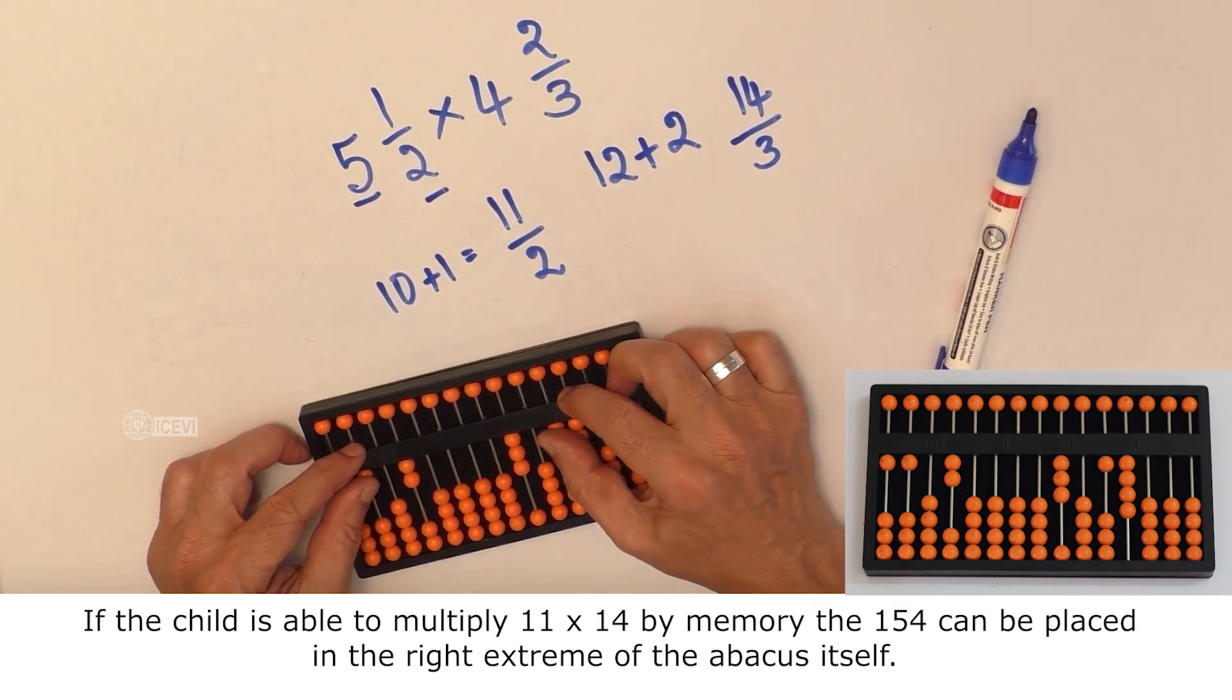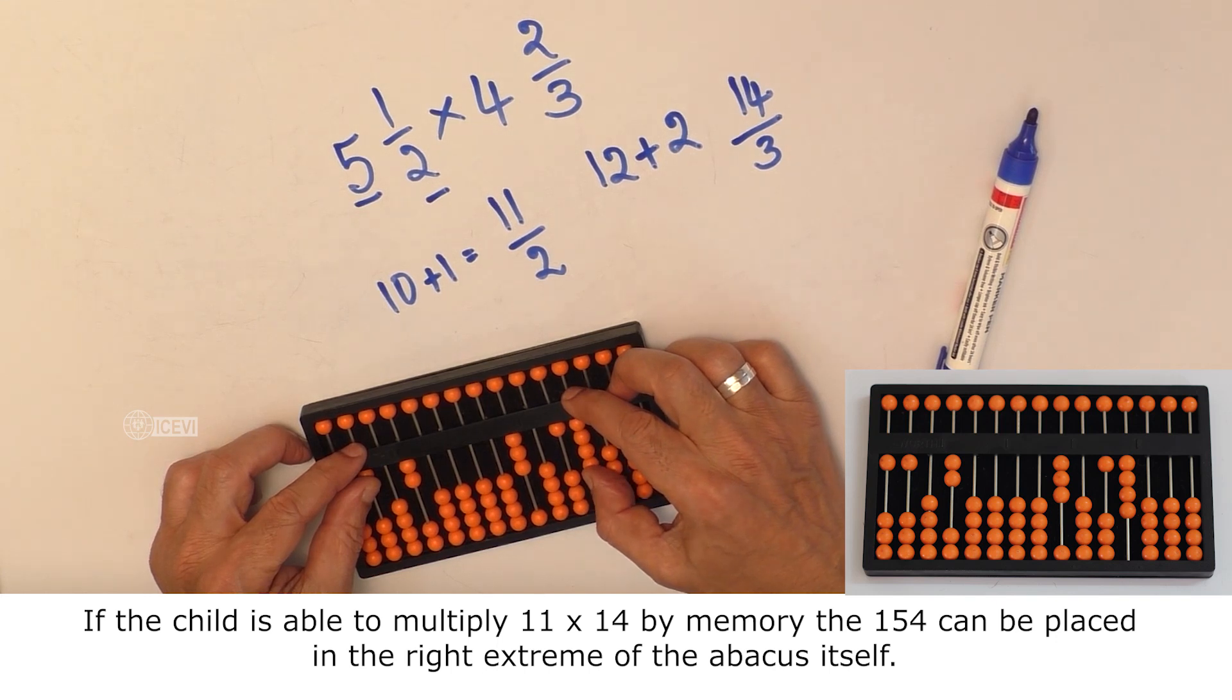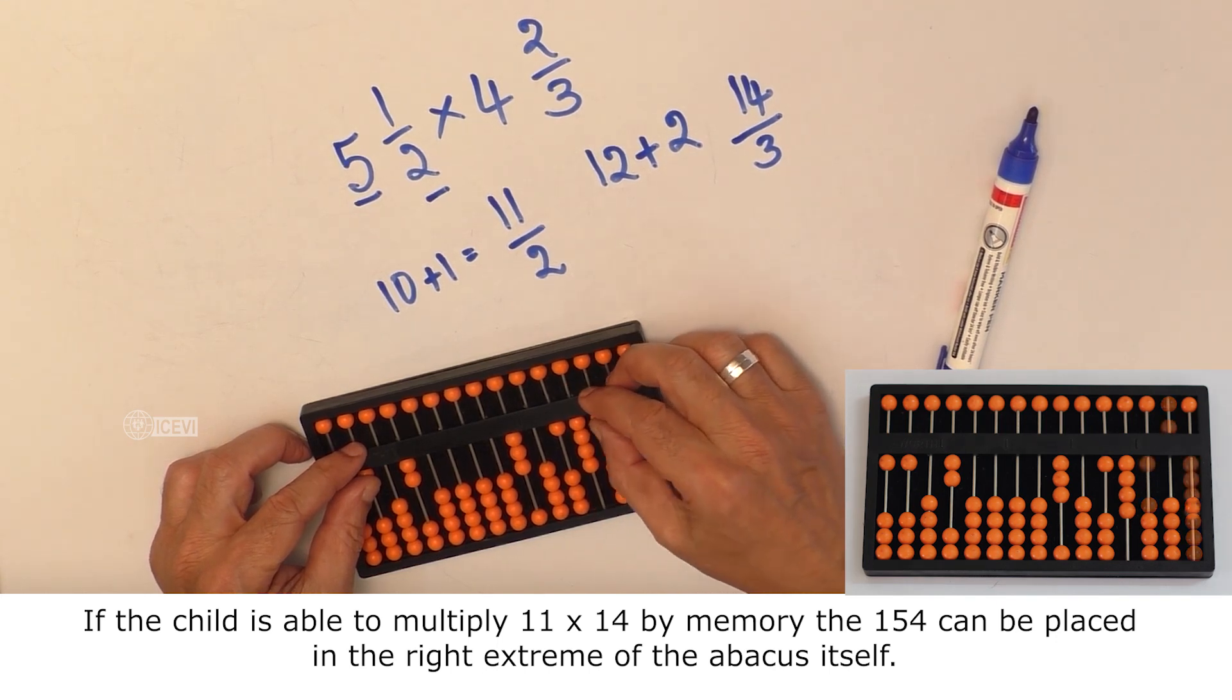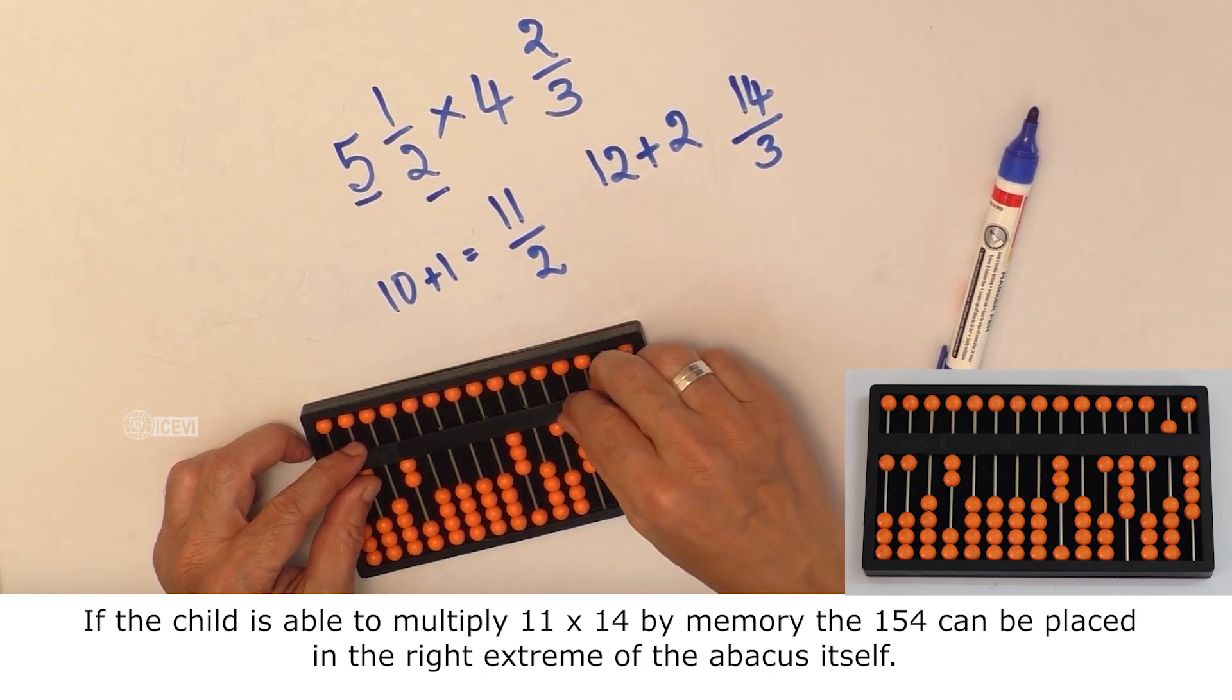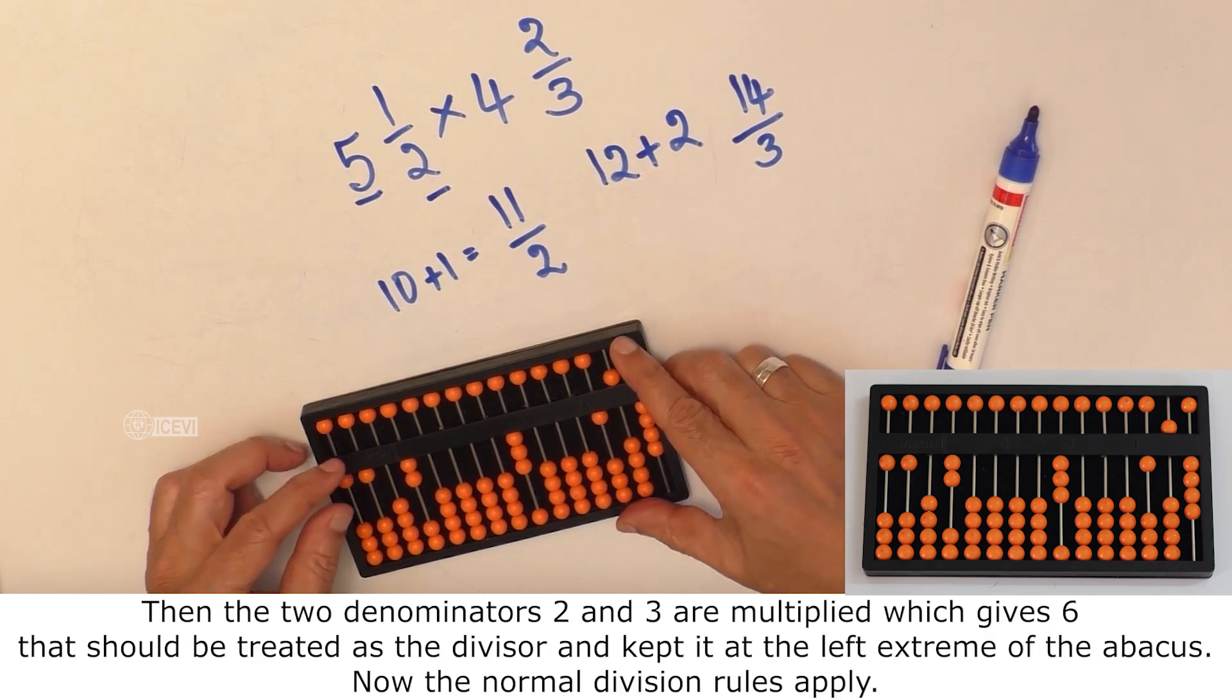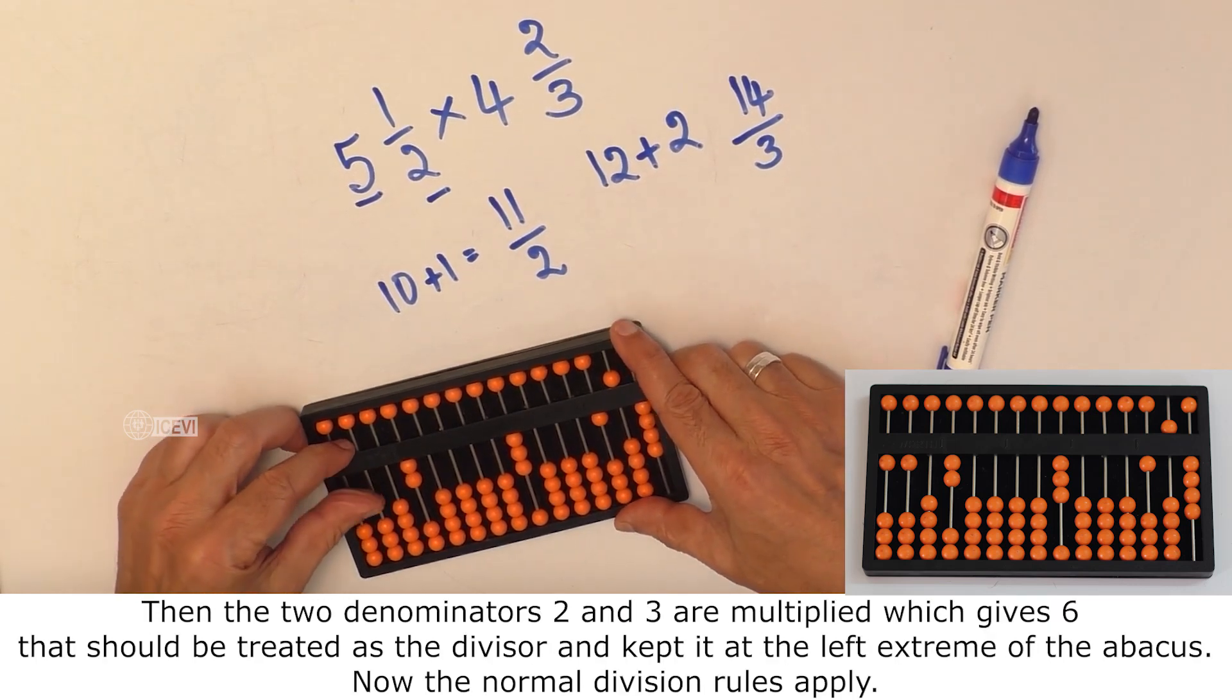If the child is able to multiply 11 by 14 by memory, the 154 can be placed in the right extreme of the abacus itself.